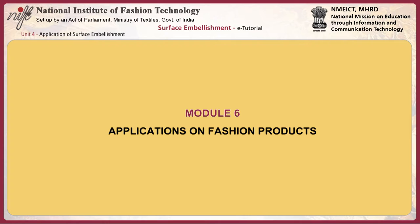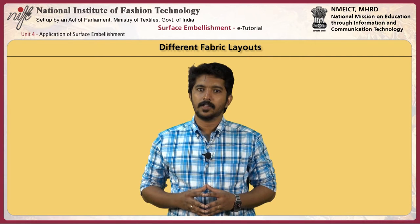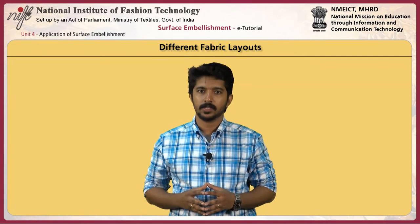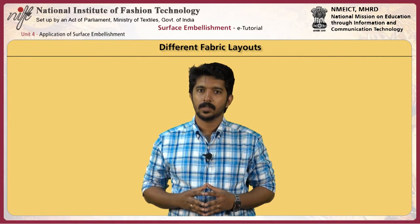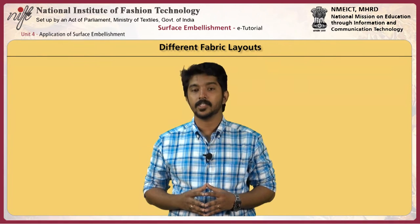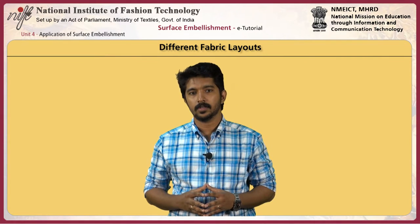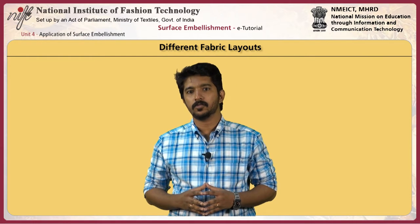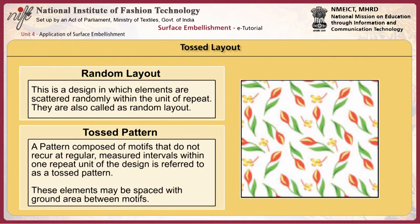This module explains how to apply a surface embellishment technique conceived on fashion and apparel products. The different fabric layouts include: tossed layout, packed layout, all-over layout, florid layout, bouquet layout, ogee layout, border layout, engineered layout, one-way layout, two-way layout, and multi-direction layout. A tossed layout is a design in which elements are scattered randomly within the unit of repeat, also called a random layout — a pattern composed of motifs that do not repeat at regular measured intervals.